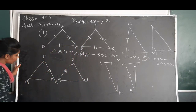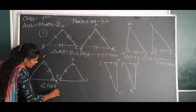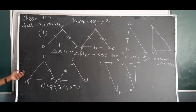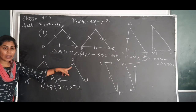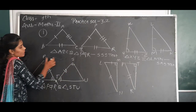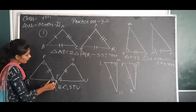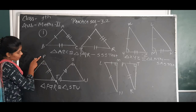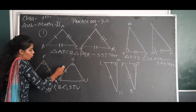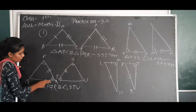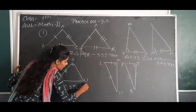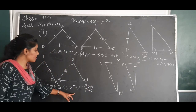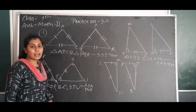Then third: triangle PQR is congruent to triangle STU. Here, angle P is congruent to angle S, angle R is congruent to angle T, and segment PR is congruent to segment ST. That is two angles and one side, so by ASA test. Triangle PQR is congruent to triangle STU by ASA test.